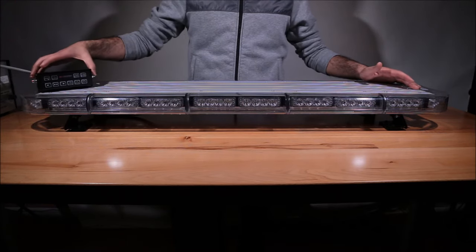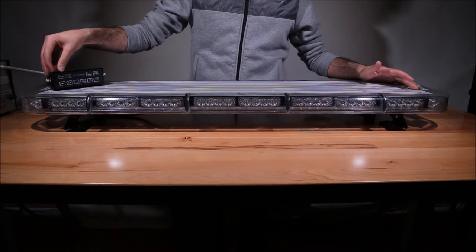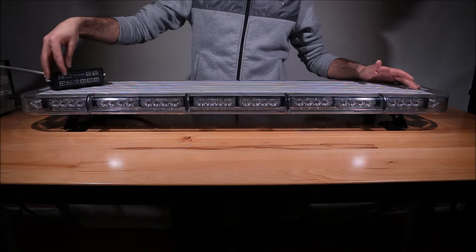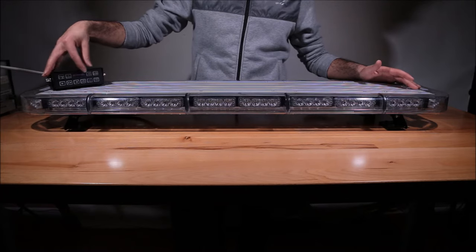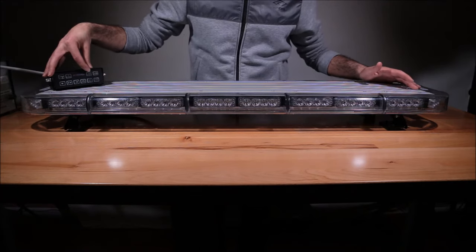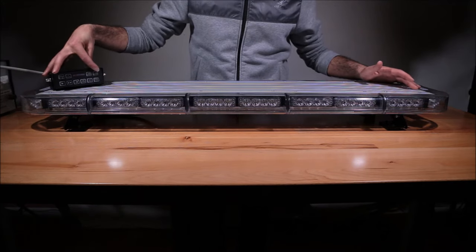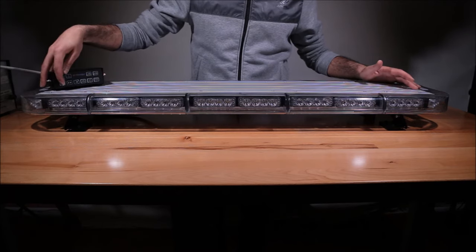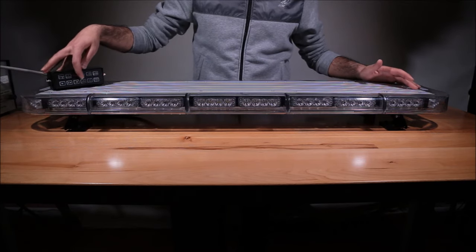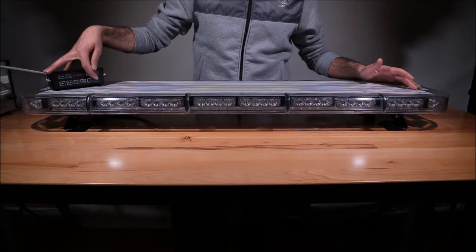This light bar includes our control box which includes buttons such as the power button, the rear and front control button, the dual color for dual color light bars, flash pattern button, left to right, center out, right to left, takedown, left alley and right alley.